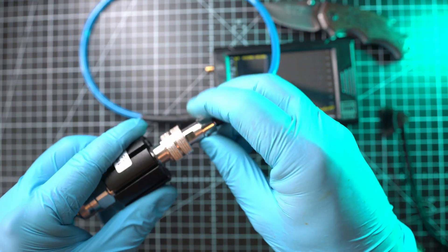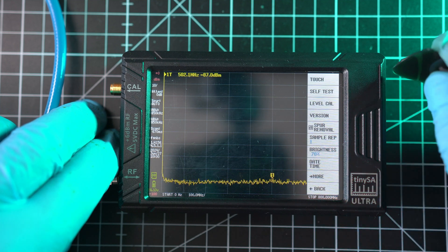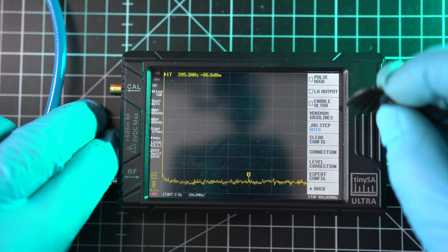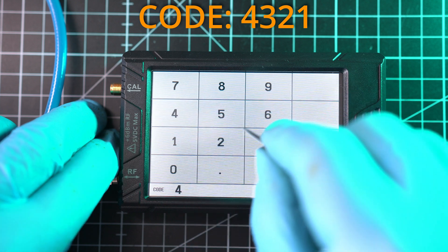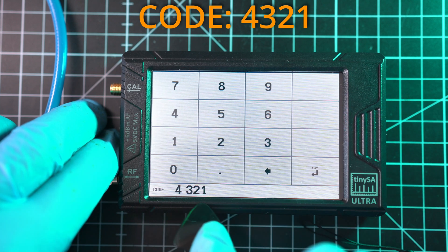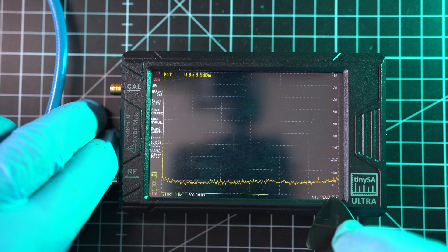For measuring spurious RF emissions, we have to set couple of things. Menu, config, more, and here enable ultra. This requires code for some reason. So the code is 4321. And hit enter. Now we have a range up to 3 GHz.